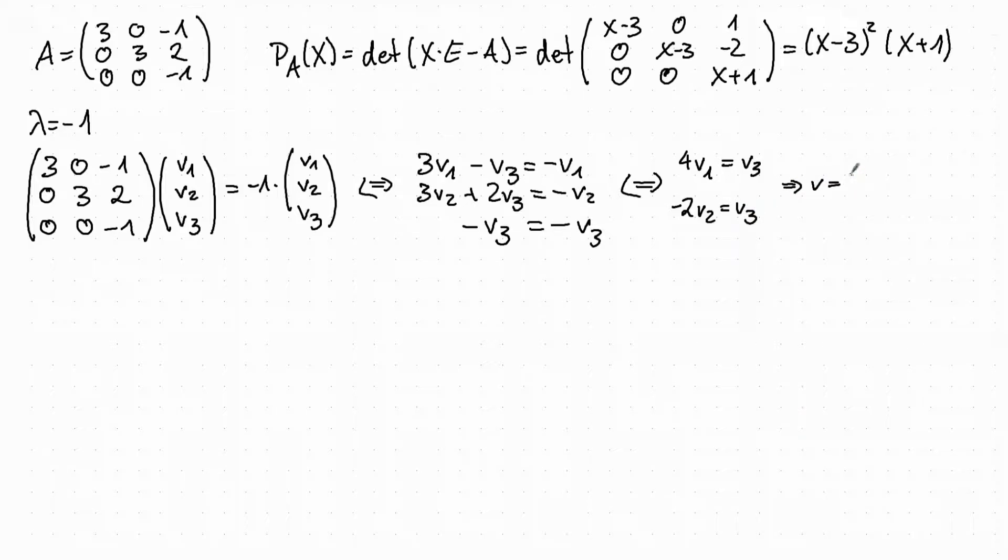A vector that fulfills all of these conditions is for example one where you put v3 equal to 4, then v2 has to be minus 2 and v1 has to be 1.